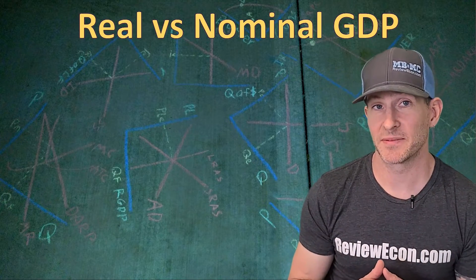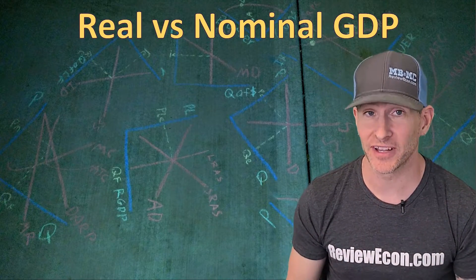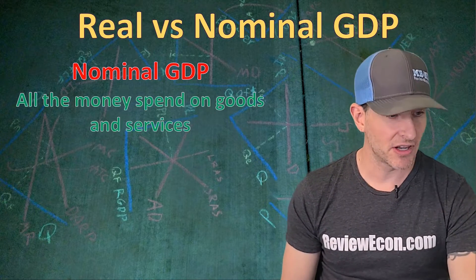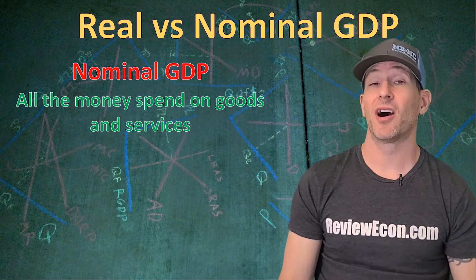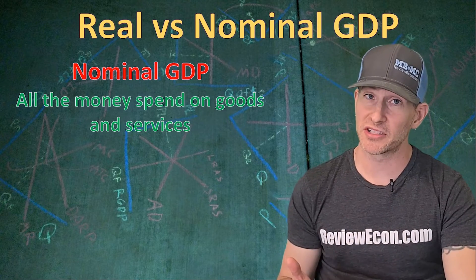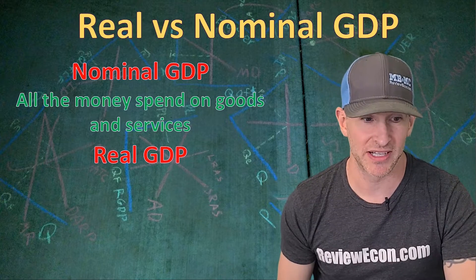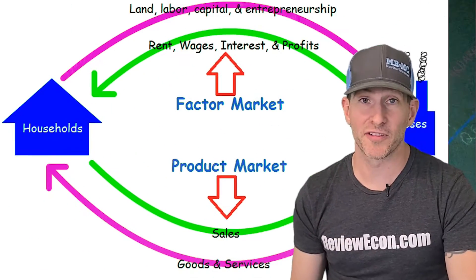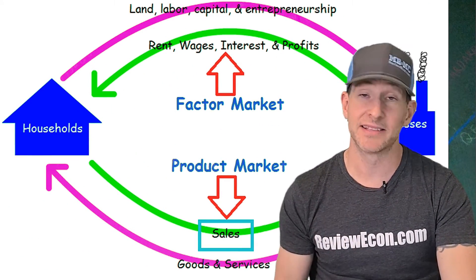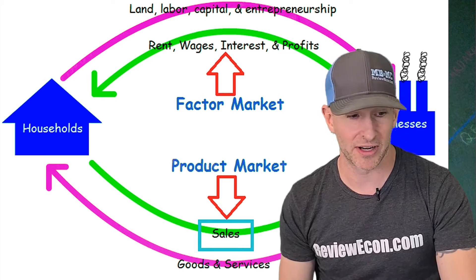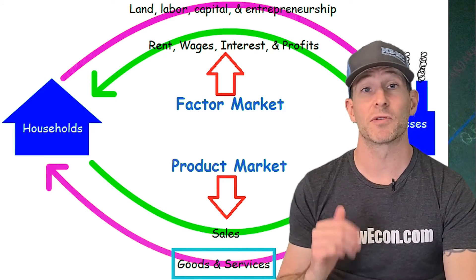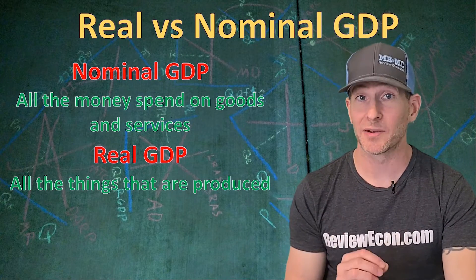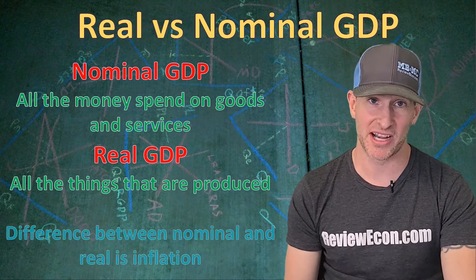As you learned in the video about the CPI, the difference between nominal and real is inflation. Nominal GDP is GDP not adjusted for inflation — it is all the money that is spent on goods and services within an economy. When you adjust for inflation, we call that real GDP, which represents all the things that are produced. If we take a look at the circular flow diagram, nominal GDP is all of the sales within that market, while real GDP measures the goods and services themselves. Once again, the difference between nominal and real is price changes, or inflation.